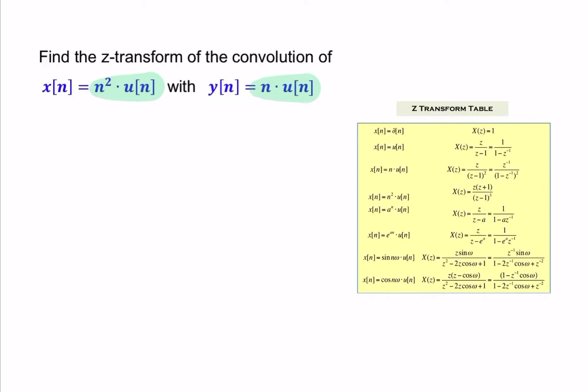and we want the Z-transform of the convolution. Now remember the convolution property: if you have two signals convolved in time, that's equivalent in the Z-domain to simply multiplying the two.